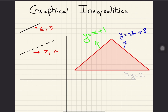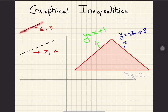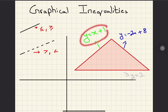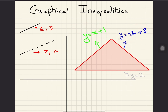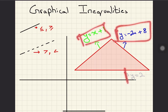In graphical inequalities there are two kinds of lines: a solid line and a dotted line. A solid line is used when the inequality sign includes 'equal to' — that is, greater than or equal to, or less than or equal to. A dotted line is used when the sign is strictly greater than or less than, with no equal to.